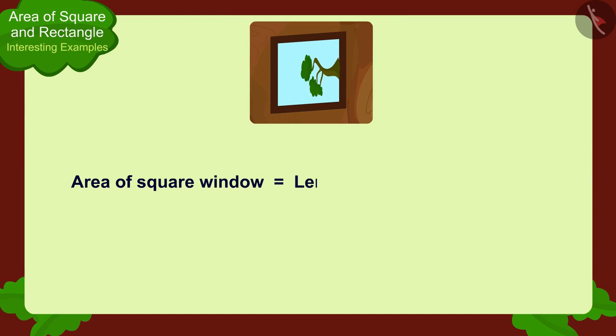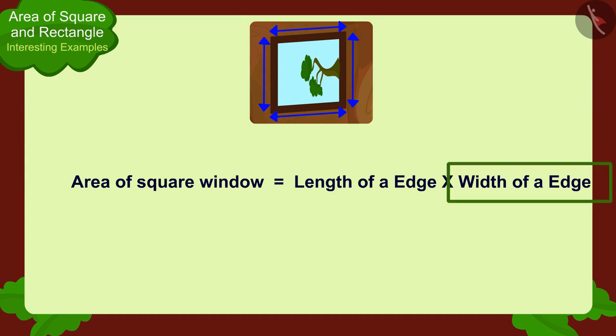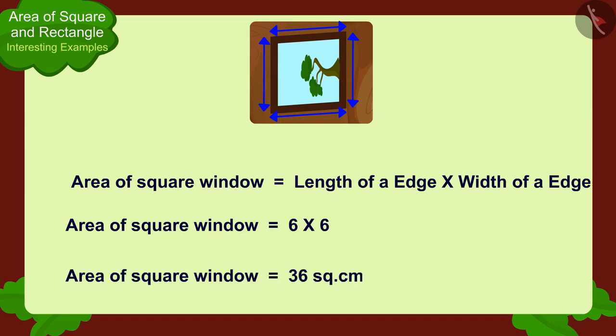But do you remember children that all edges of a square are exactly the same? Therefore, the measurement of the length and width of this square window will be exactly the same, six meters. In this way, the area of the window would be six times six, thirty-six square meters.